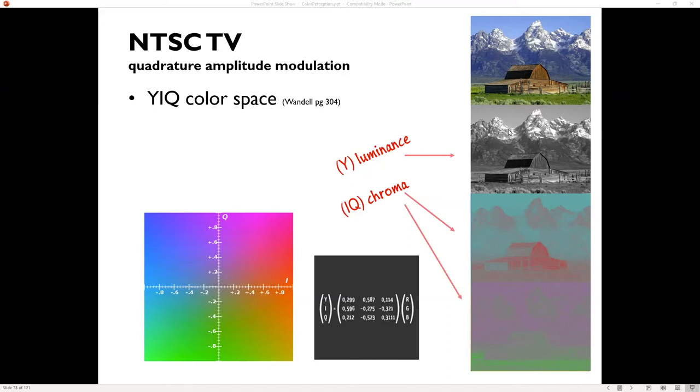So this was old black and white TV and they wanted to just add to it. So they were already broadcasting this. And so they said, well, if we just, we don't want to switch to RGB because then we would get rid of our black and white. So we're going to broadcast Y, and then we're going to do IQ.